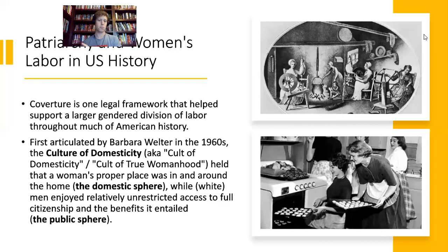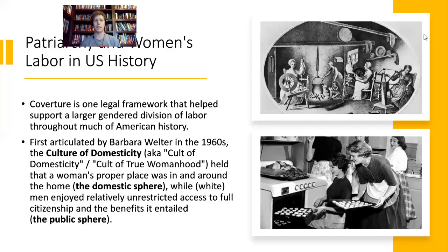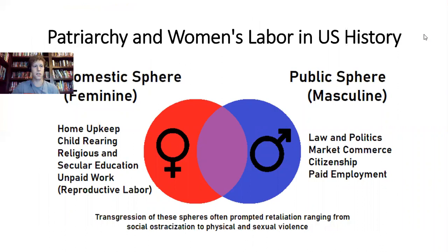Women were largely excluded from the public sphere while men were encouraged to be in it. Under coverture, the wife who presided over the domestic sphere was still someone the man had to manage — women were treated like children, infantilized, and not viewed as quite as competent as men. A man would occupy the public sphere but still dictate terms of the domestic sphere to his wife, who was answerable to him.